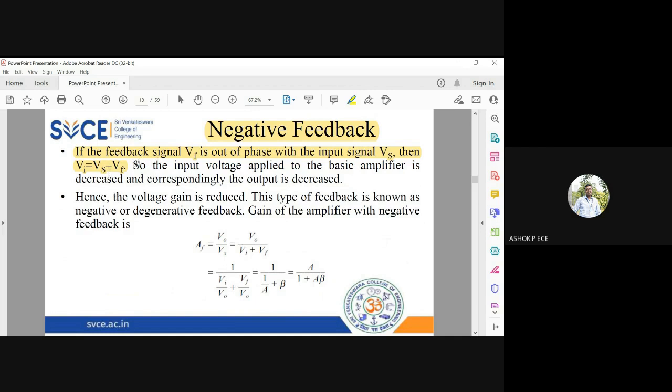So the input to the amplifier is decreased. VI is less, so V naught is also less. If V naught is less, the gain is also less. Logically, amplifiers having negative feedback will have reduced gain because the input to the amplifier is subtracted. As a result of the subtracting nature of the inputs, the voltage gain of the amplifier is reduced.